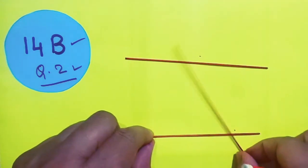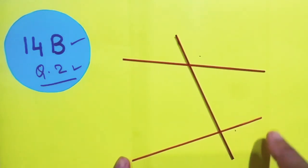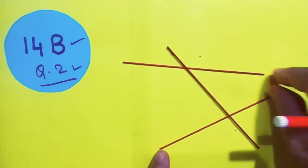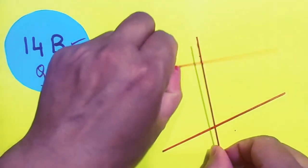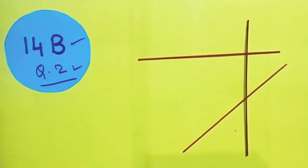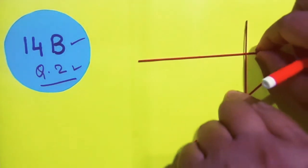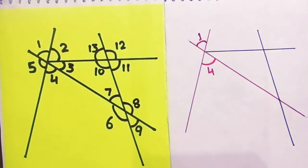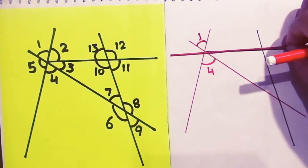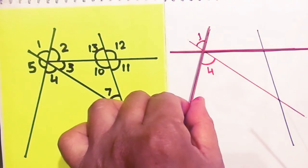The problem lies when the transversal doesn't cut a straight line looking like parallel — meaning the line will be somewhat like this. You will have lots of confusion. However, we have the stick over here, and our problem will be solved if we directly go to question number 2, where lines are being cut by the transversal.